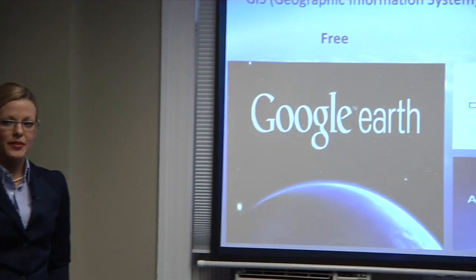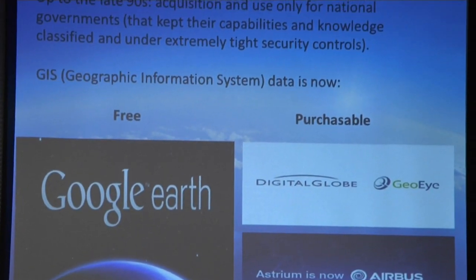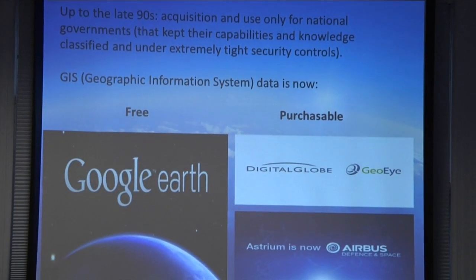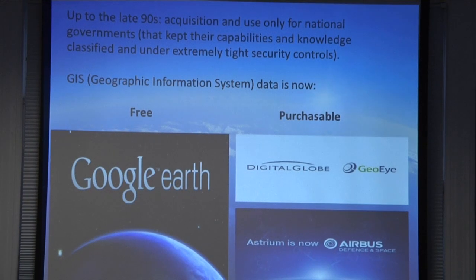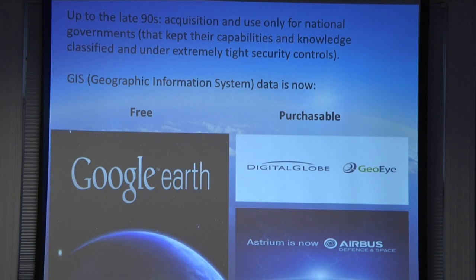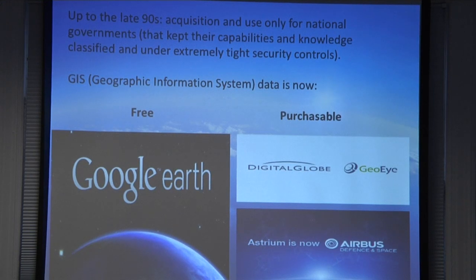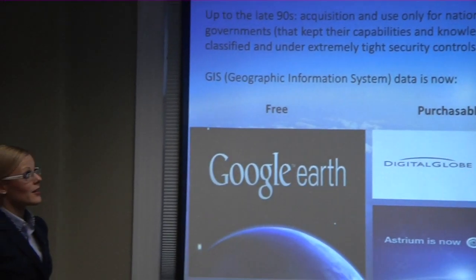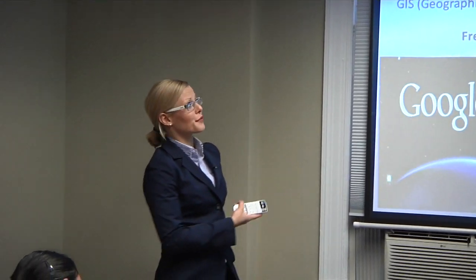Commercial satellite imagery became available to non-government users only at the end of the 1990s. Before that, the whole acquisition process was kept very close by governments — most of it was classified, and a lot of it still is today, depending on the resolution and location of the image. Geographic information system data — GIS data — is available free. We all sort of grew up with Google Earth, but before that it wasn't available.